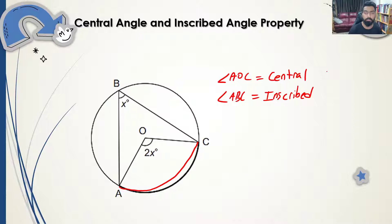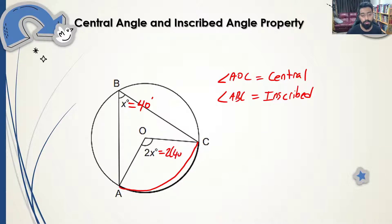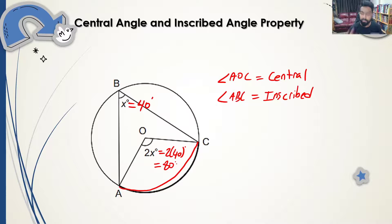The central angle will always be twice the measure of the inscribed angle. For example, if the inscribed angle x is 40 degrees, the central angle will be 2 times 40, which is 80 degrees. Conversely, the inscribed angle will be half of the central angle.